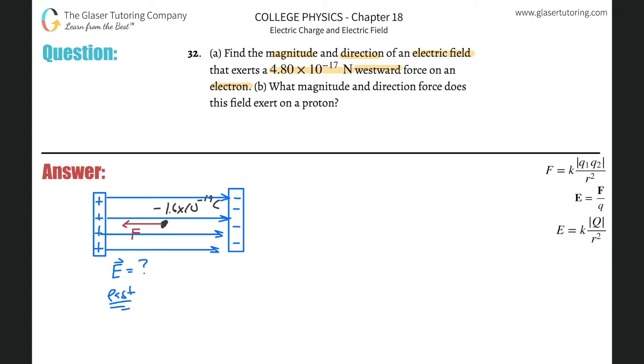Now, how do we find the magnitude? Well, anytime now I start thinking about magnitude, I just start thinking about calculations, formulas. We're told the force value, they said it's 4.8 times 10 to the minus 17 newtons. We know the charge of an electron, so therefore we can find the electric field strength by using the formula.